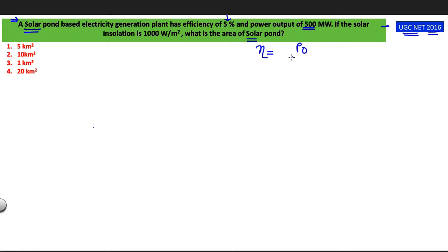power output. I am writing PO divided by power input. What was the power output when the power input was this much into 100.